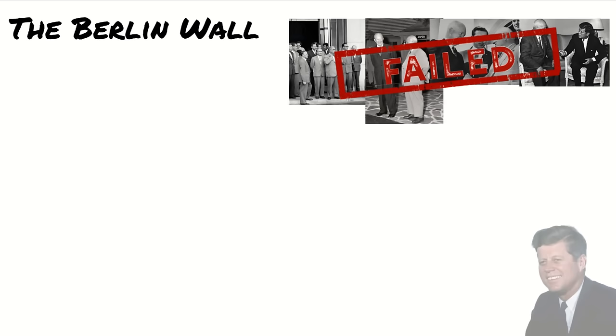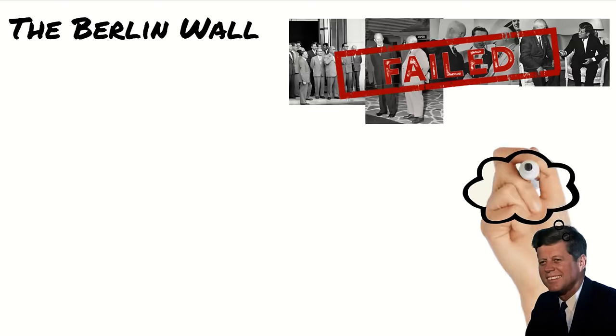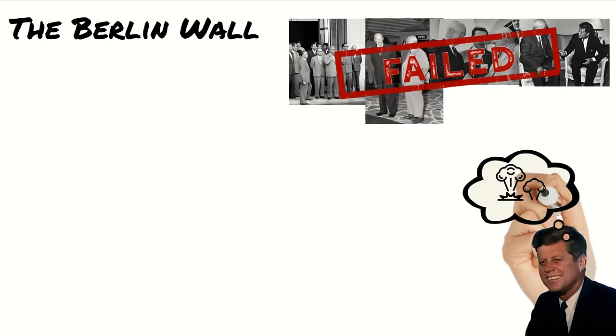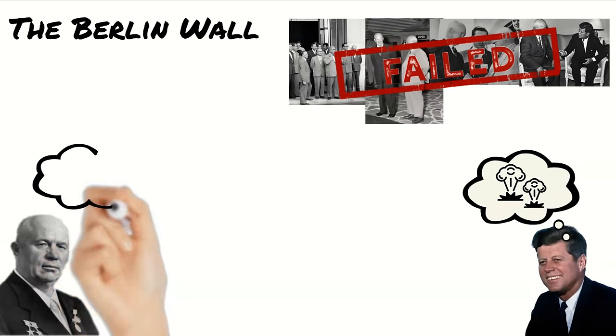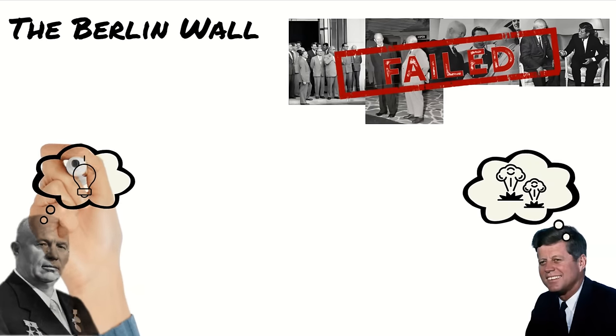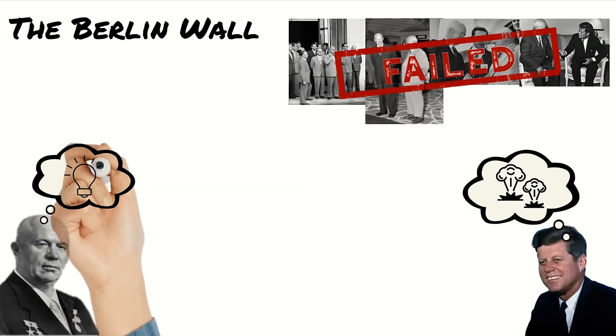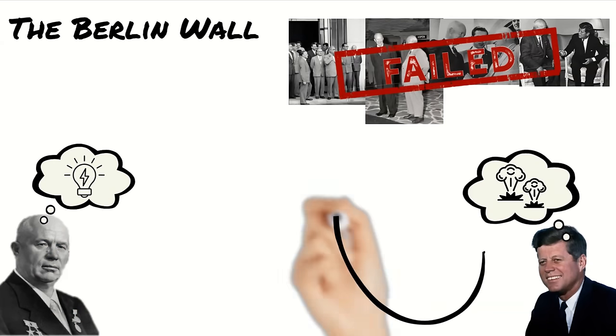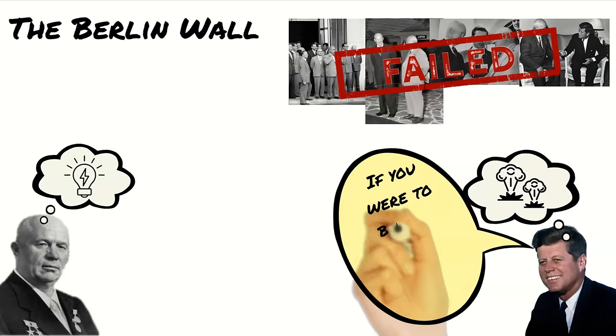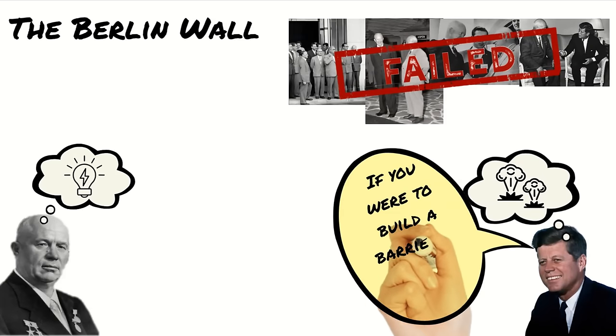You will remember that the four summit meetings following Khrushchev's Berlin ultimatum had been unsuccessful in finding a solution to the conflict. Kennedy had returned to the USA to prepare for war, but Khrushchev was unwilling to risk a nuclear war with the USA. He therefore was looking for solutions. Kennedy had let slip at the Vienna summit that he would not oppose the building of a barrier.